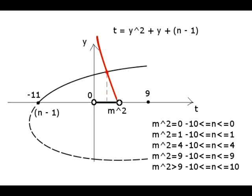For m equals 0, there are 11 such black curves, the one that starts at minus 11 when n equals minus 10, and the last one that starts at minus 1 when n equals 0.